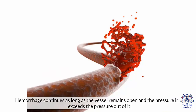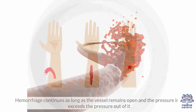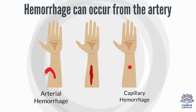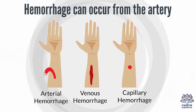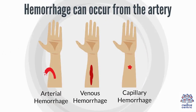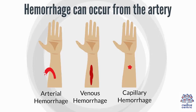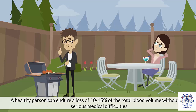Hemorrhage continues as long as the vessel remains open and the pressure in it exceeds the pressure out of it. Hemorrhage can occur from the artery, or arterial hemorrhage; capillary, or capillary hemorrhage; or vein, or venous hemorrhage.